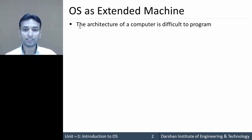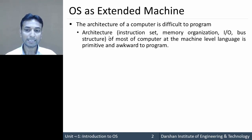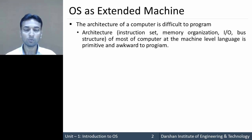The architecture of a computer is difficult to program. If we consider the architecture, it means the instruction set, memory organization, I/O, and bus structure. This architecture of most computers at machine level language, or low level language, is primitive and awkward to program — meaning it is difficult to program.